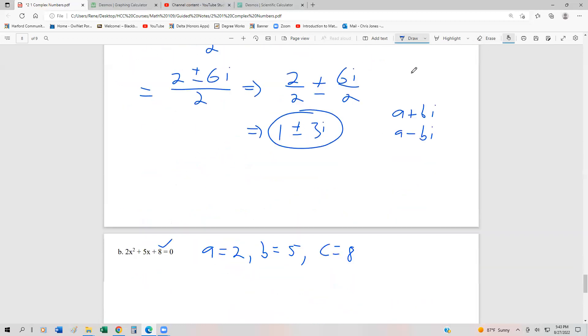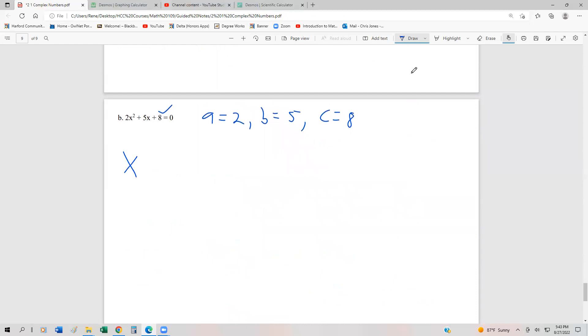We have that x equals the opposite of b, which is negative 5 plus or minus the square root of b squared, which is 5 squared minus 4 times 2 times 8. And then we're going to divide that by 2 times a. So if we divide that by 2 times a, that's 2 times 2.